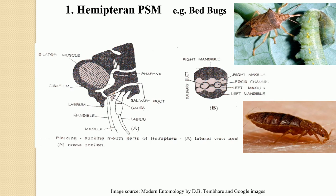The salivary duct opens on the tip of the hypopharynx. Both the food canal and salivary canal lie between the closely opposed inner surfaces of the maxillary stylets. The hypopharynx is a median conical projection projecting into the proximal part between the basis of the stylets. In this way the appendages lose their primary structure and become elongated needle-like structures forming the stylets, which is the characteristic feature of the hemipteran piercing and sucking type of mouthparts.